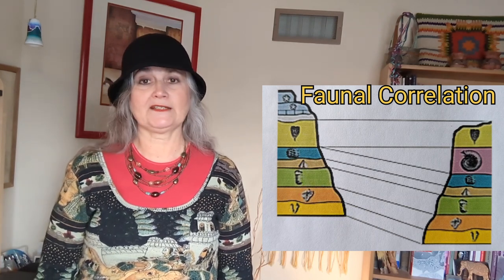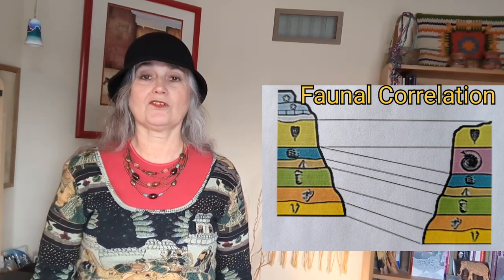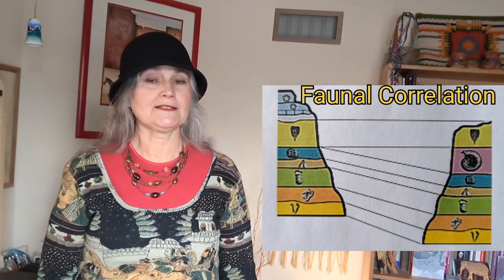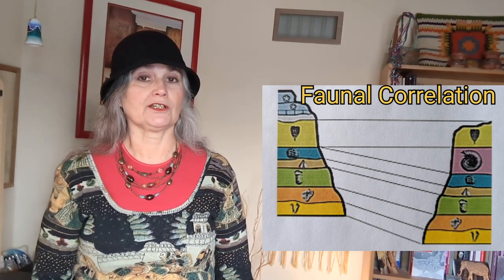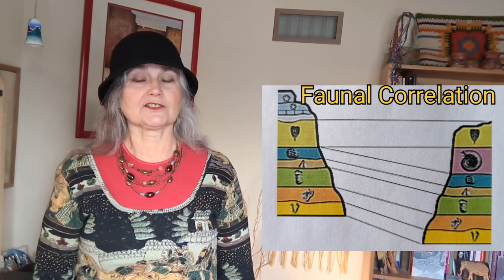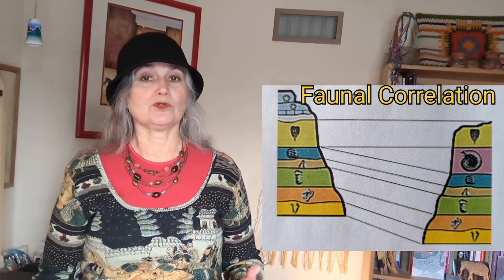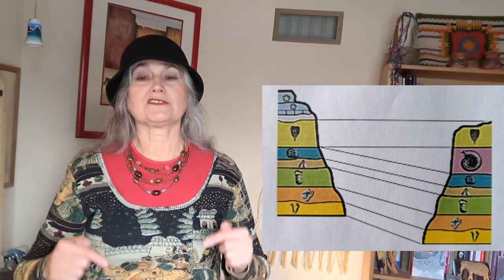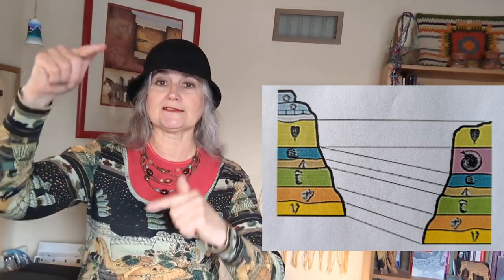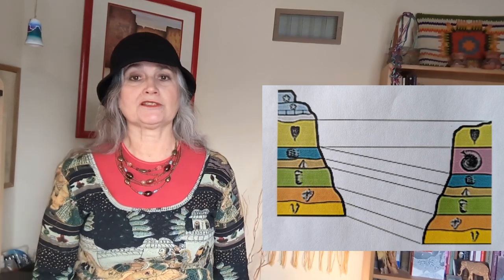South African sites cannot be dated in that way because there are no volcanoes. However, the sites can be dated using biostratigraphy or faunal correlation. Fossil animals such as fossil baboon or fossil pig teeth can be matched to the same fossil teeth from East African sites which have been dated using potassium-argon. This then provides a range of dates for sites in South Africa. Dates for South African sites are not as precise as for East African sites, but using biostratigraphy does provide upper and lower boundaries.